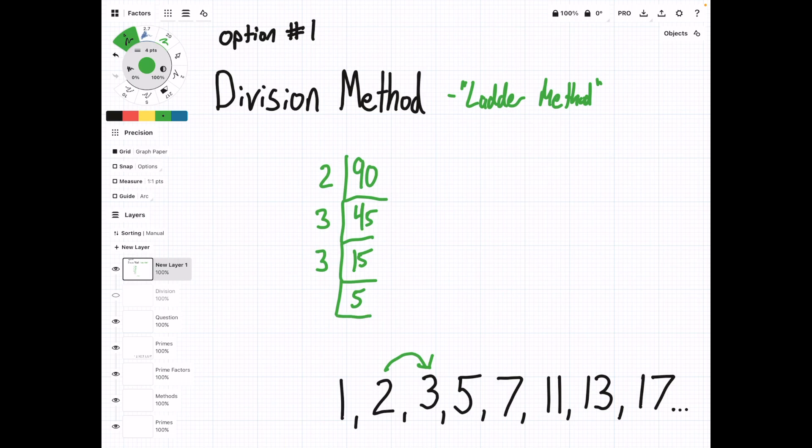This time, you can't divide by 3, so you move on to the next number. So you put 5 out here. 5 divided by 5 is 1. And then when you have 1, 1 means you're done. So now if we look at all of these numbers along the left side here, these are the prime factors of 90.